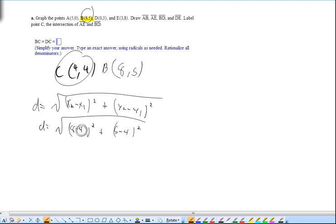So we have, 8 minus 4 is 4, 4 squared is 16, 5 minus 4 is 1, 1 squared is just 1, so the answer is going to be the square root of 17.